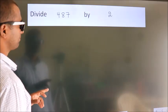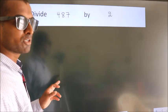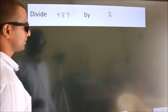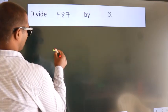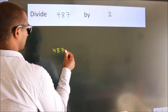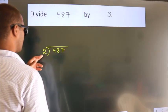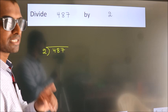Divide 487 by 2. To do this division, we should frame it in this way. 487 here, 2 here. This is your step 1.